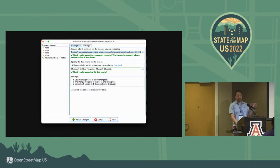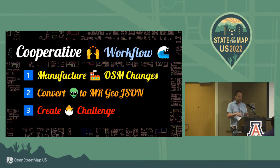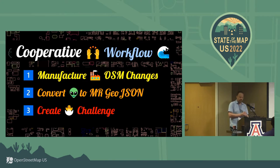How do you make these? I want to spend a few minutes on how to create these types of challenges, because it's a feature that's been in MapRoulette for about a year now but isn't being used very much. The workflow is: first, you have to find a way to manufacture these changes — what are the changes you're presenting to the mapper? Then you convert them to a MapRoulette flavor of GeoJSON that has all the properties needed to make it challenge data. Then you go into MapRoulette and create the challenge. Ideally I would love this to be only two steps.